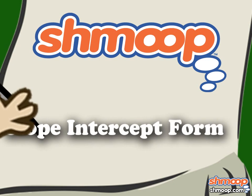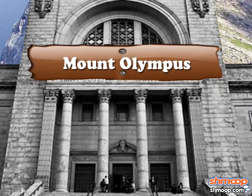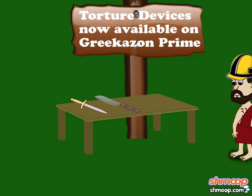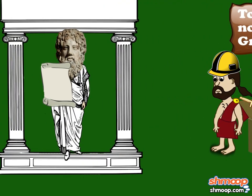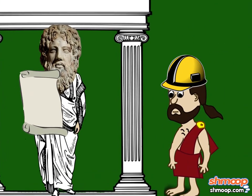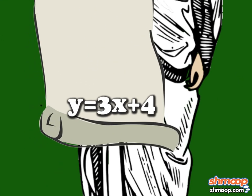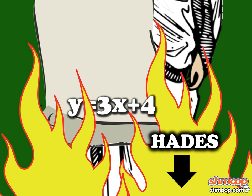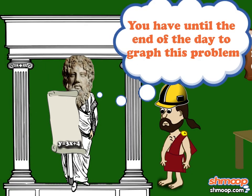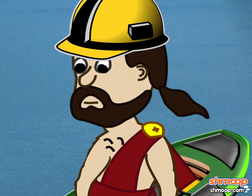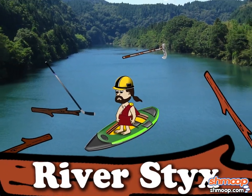Slope intercept form, a la Shmoop. You work for the Mount Olympus Department of Eternal Torture. You need to design a torture device to Zeus' specifications. But all he's given you is a cryptic note that says y equals 3x plus 4. Well, what in Hades does that mean? You have until the end of the day to graph this problem. Cerberus hasn't eaten yet. Just saying. You better figure out this problem fast, or you'll be up the river Styx without a paddle.